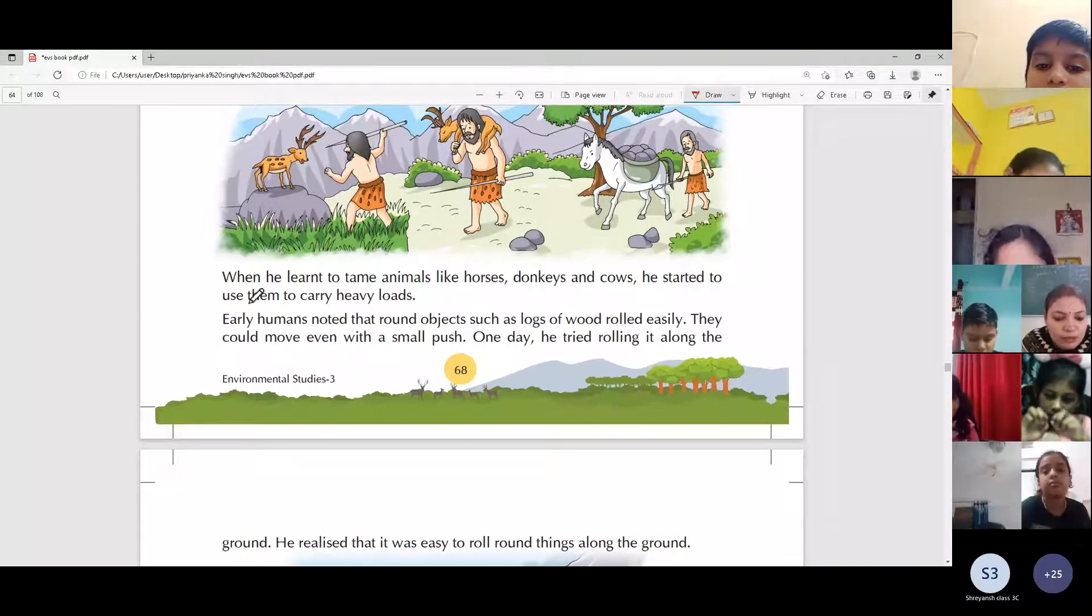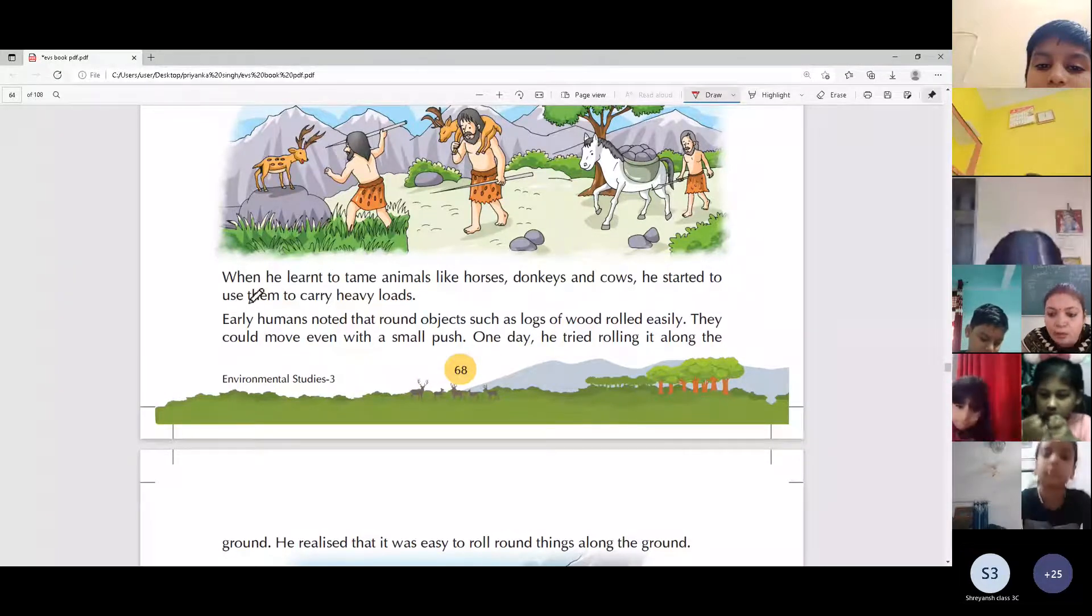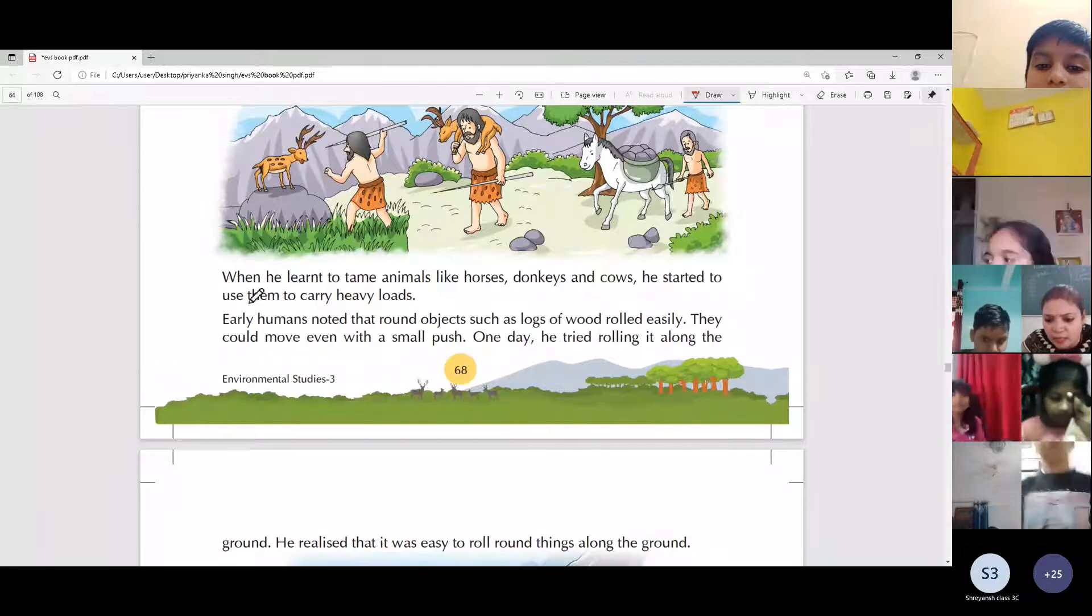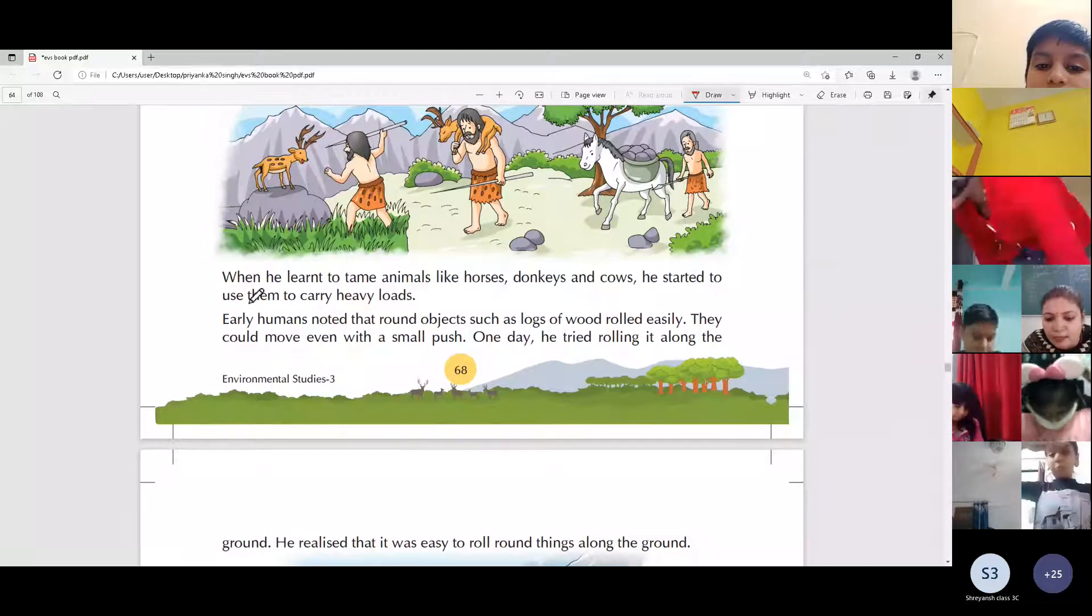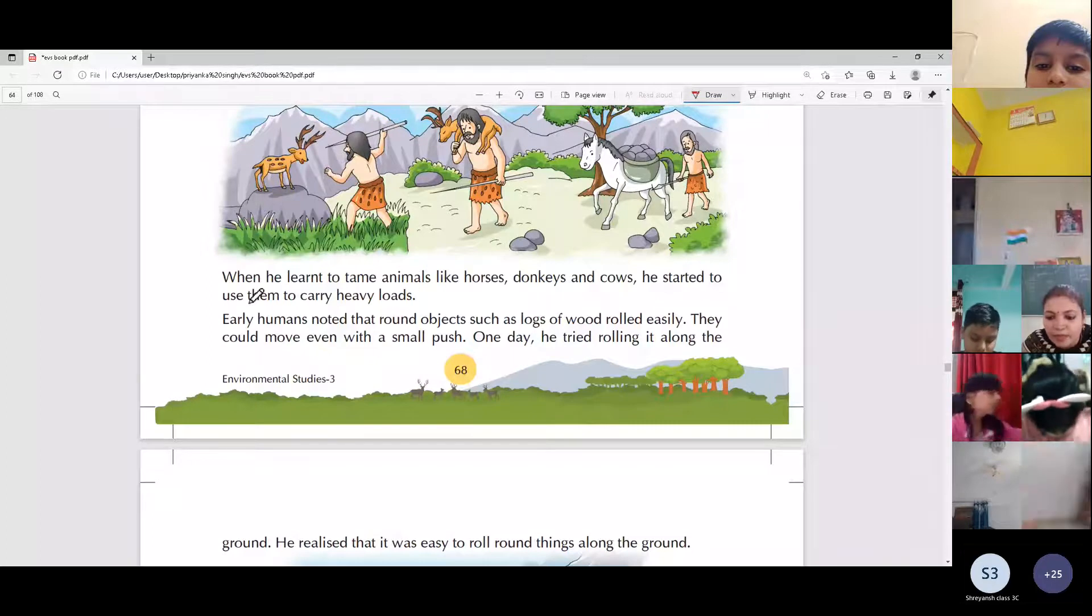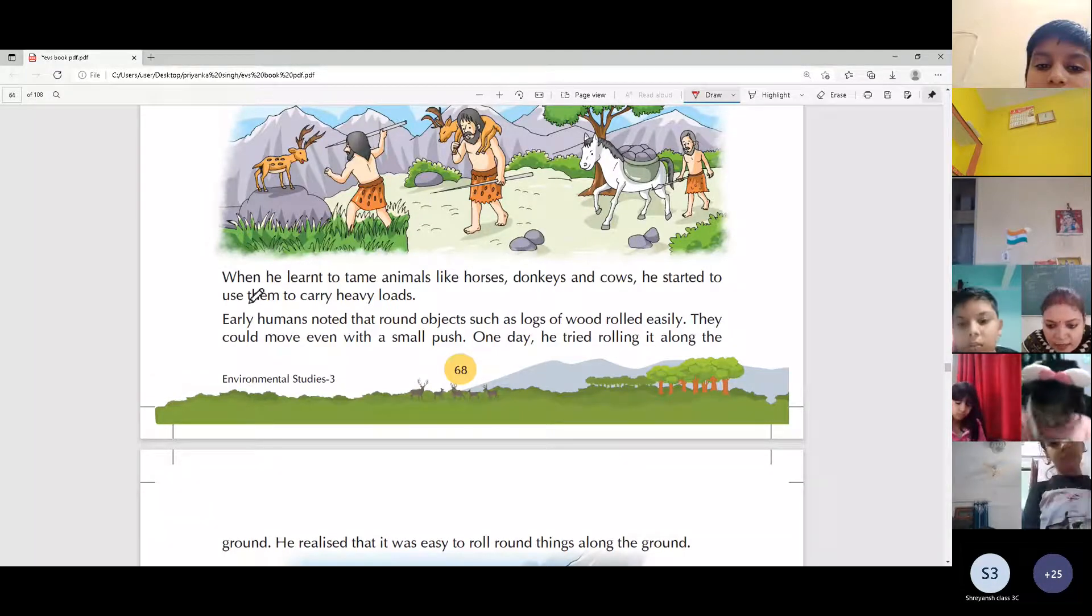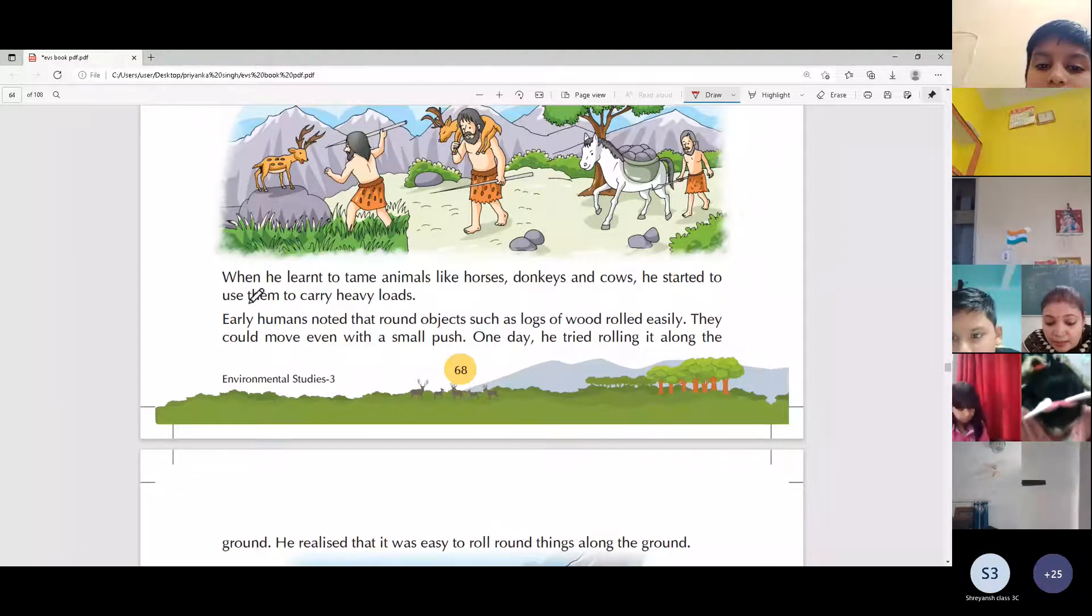Early humans noted that round objects such as logs of wood rolled easily. They realized that it was easy to roll round things along the ground.